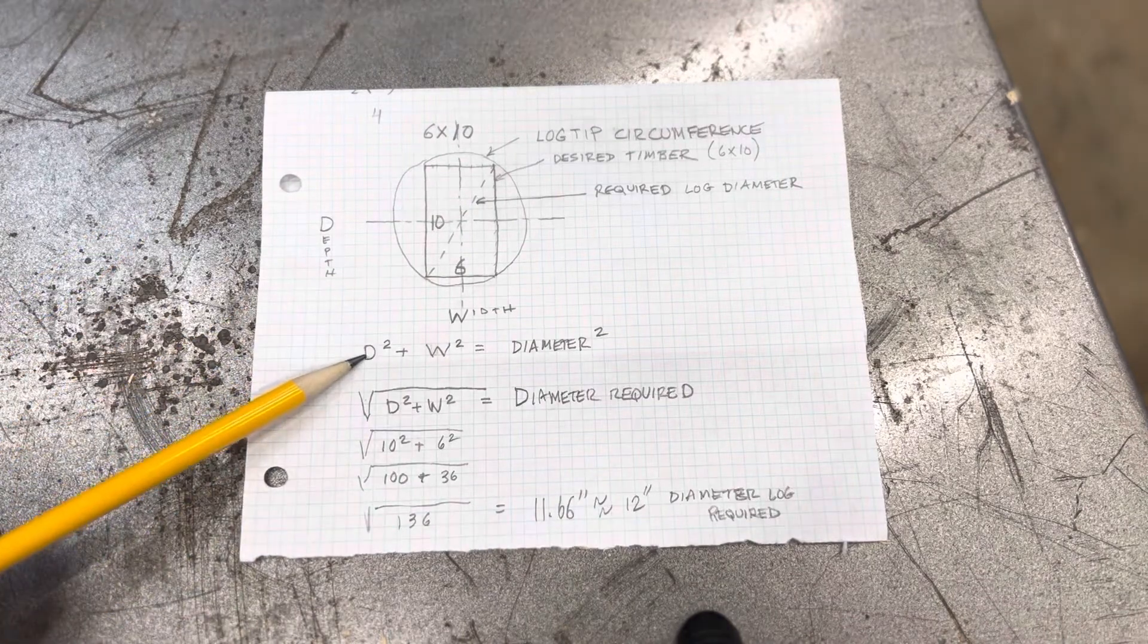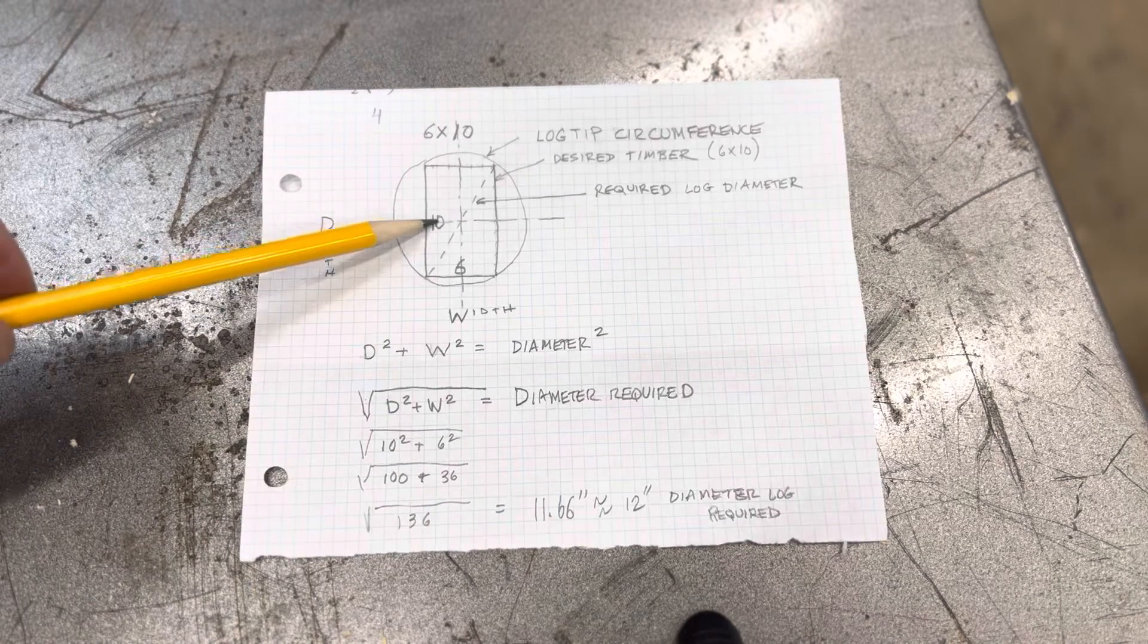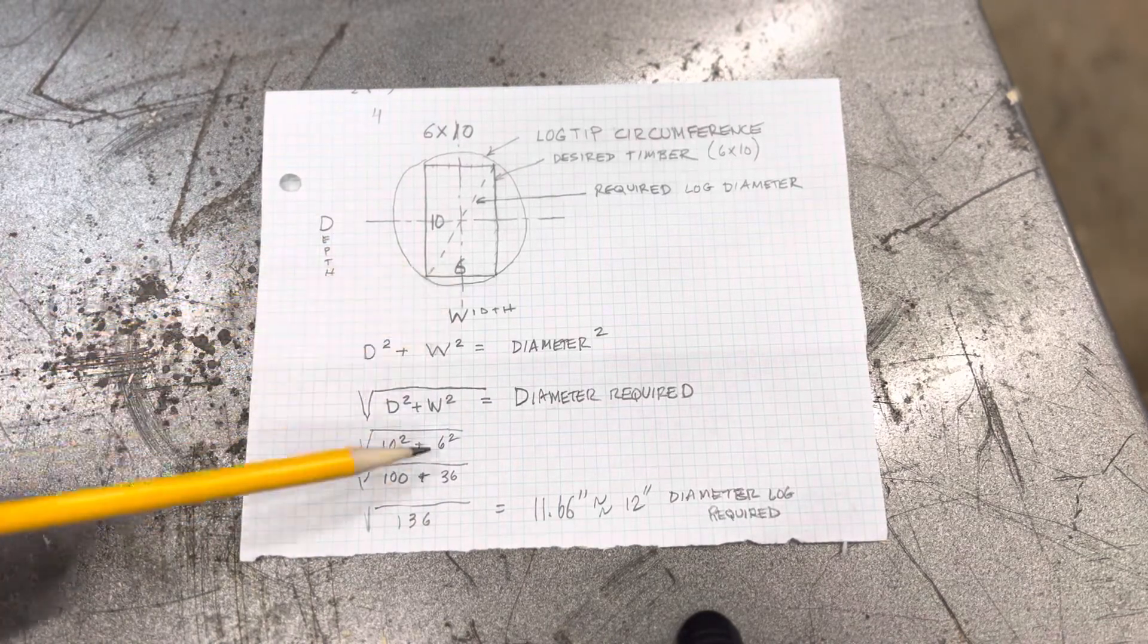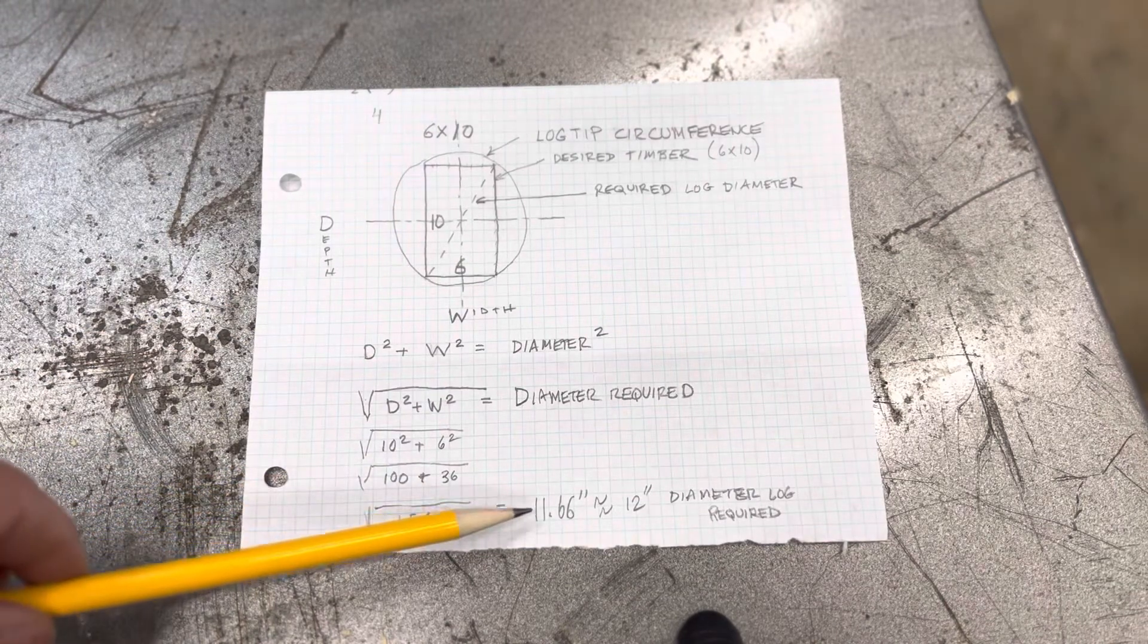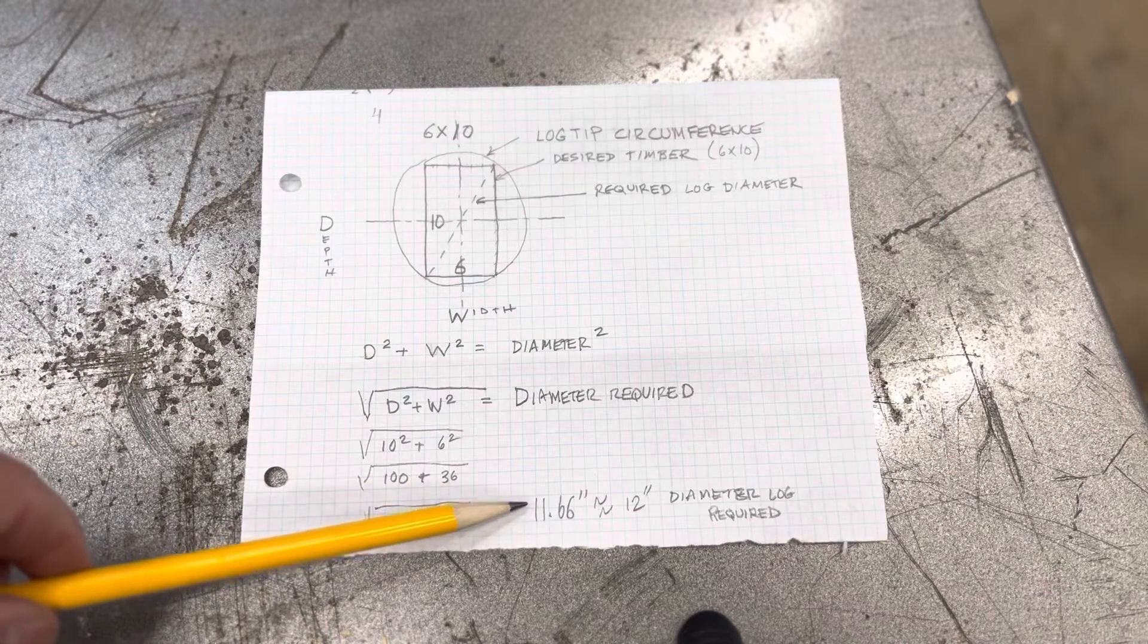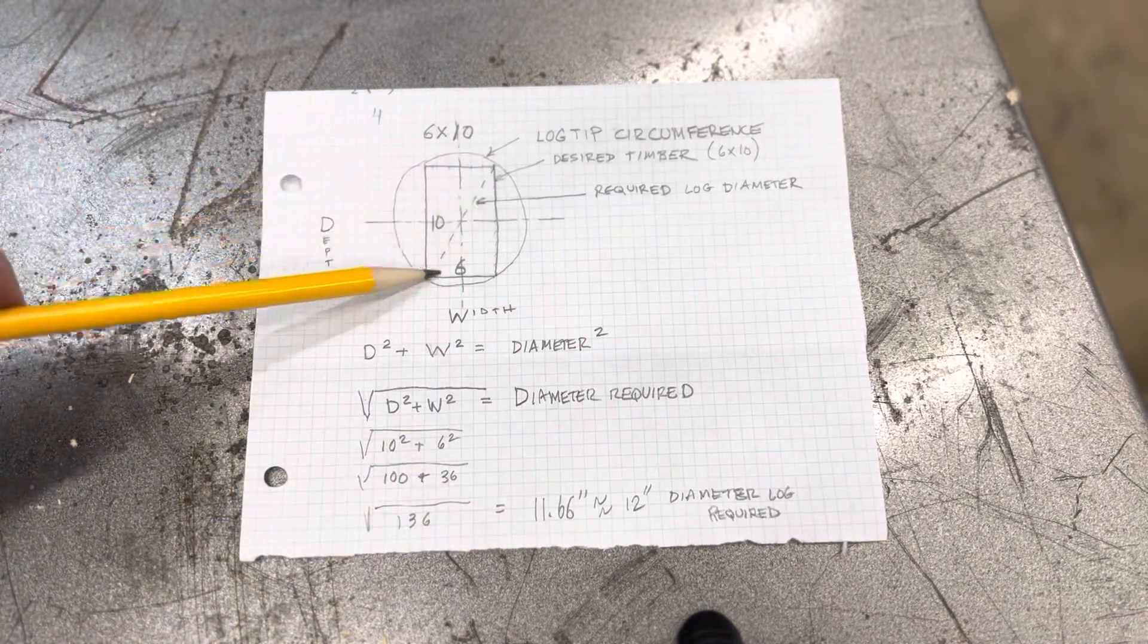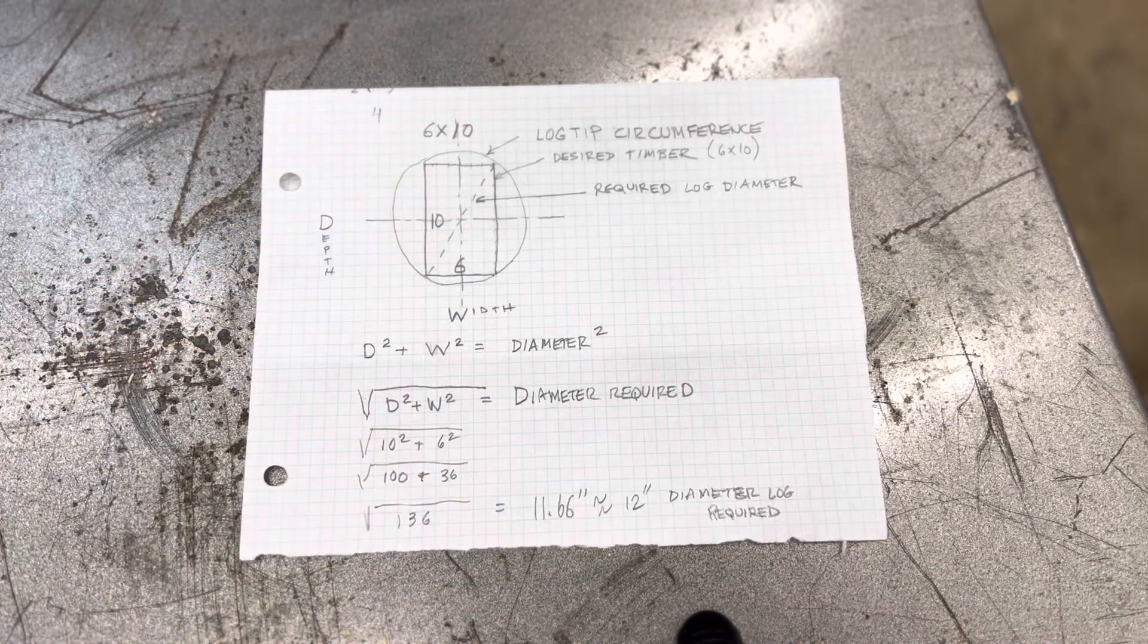So if you look at this, the D, which is the depth over here, the depth squared, so 10 squared coming way down here is 100, 6 squared, which is 36. Add those two up, 136, square root of 136. In a nutshell, you need a log that's 11.66 inches diameter to give you the required 6 by 10.